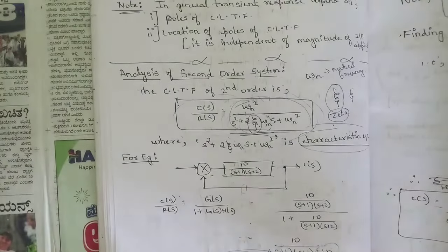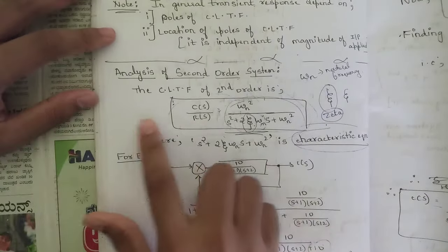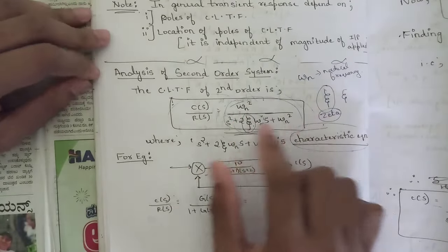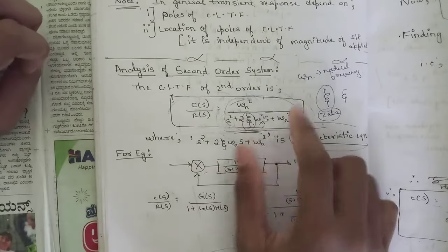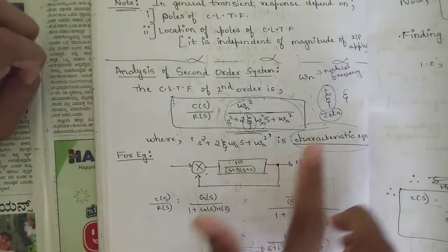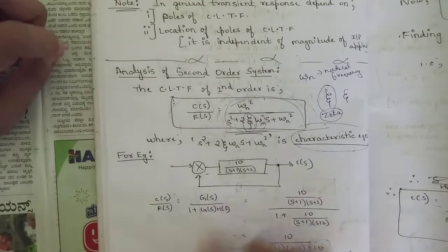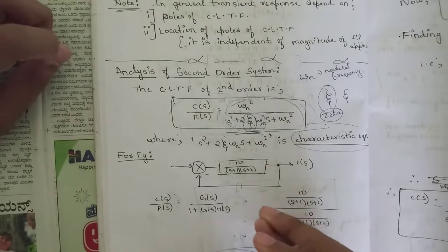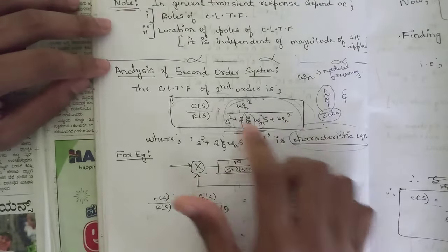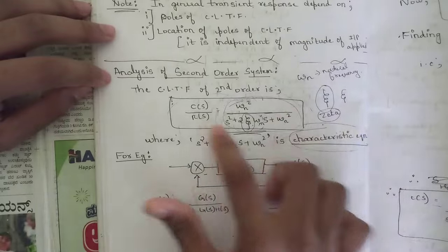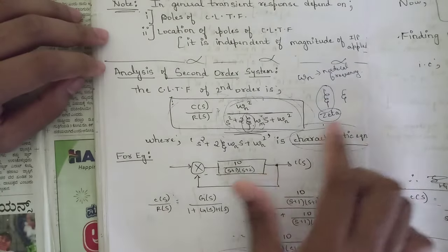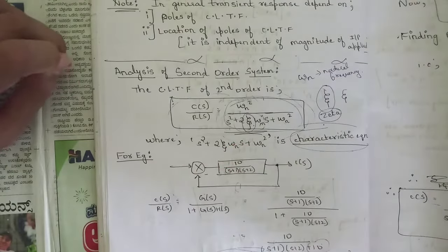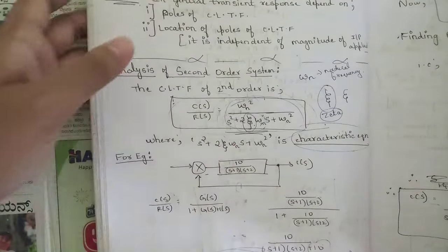Analysis of second order systems is very important. The closed-loop transfer function of a second order system in general form is ωₙ² / (s² + 2ζωₙs + ωₙ²). Given any transfer function, try to write it in this form. From the denominator, calculate ωₙ and ζ. The denominator is called the characteristic equation; ζ is the damping ratio and ωₙ is the natural frequency.